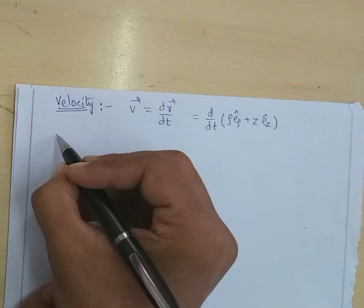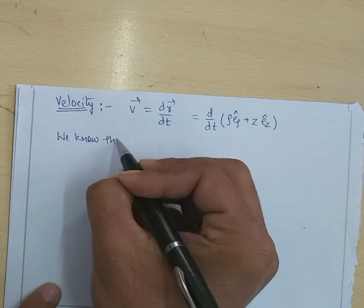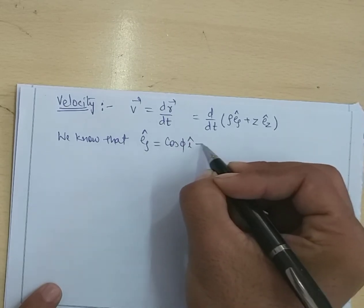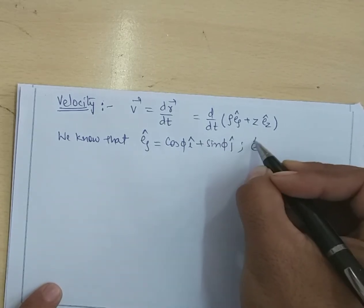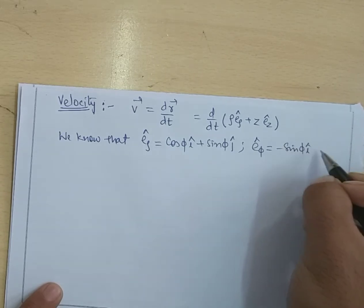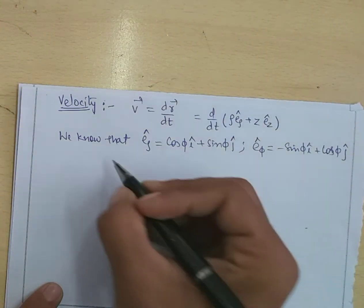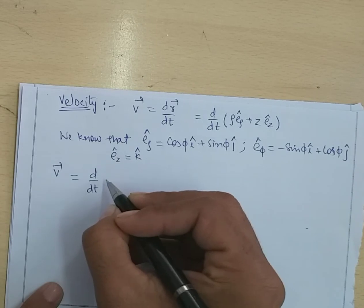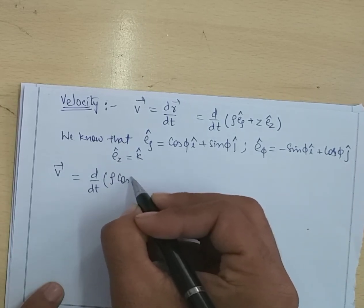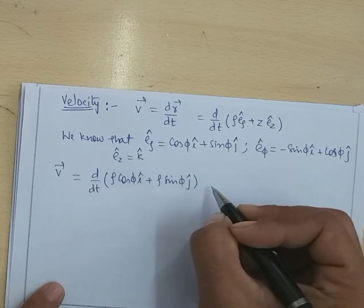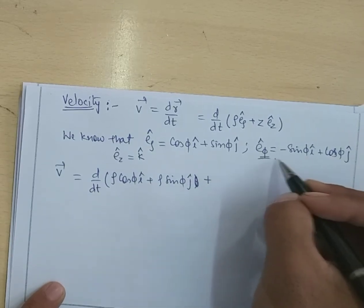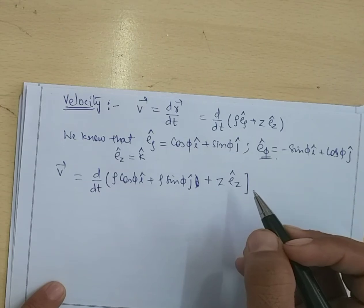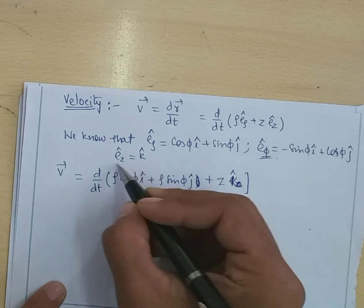We know that E_rho-cap = cos(Phi)·i-cap plus sin(Phi)·j-cap, E_phi-cap = minus sin(Phi)·i-cap plus cos(Phi)·j-cap, and E_z-cap = k-cap. So we substitute the position vector back and write it as: d/dt of [Rho·cos(Phi)·i-cap plus Rho·sin(Phi)·j-cap plus Z·k-cap].